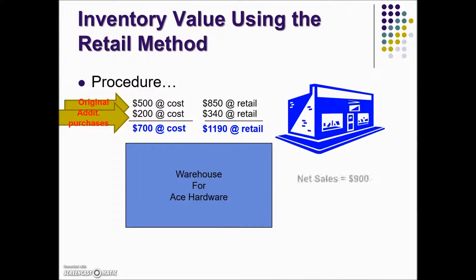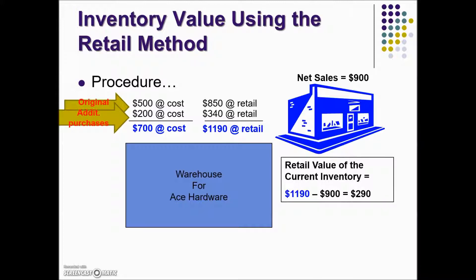These goods are taken to the store and there's a total sales of $900 during this period. We want to find the retail value of the current inventory. So we take the total retail less what's sold, meaning there's $290 worth of inventory at retail value — the selling price.